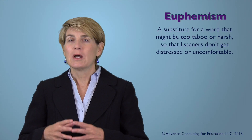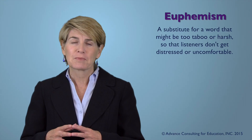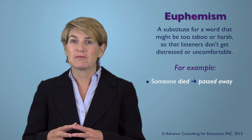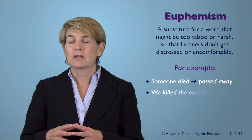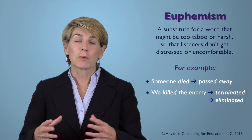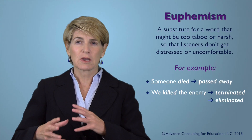A euphemism is a word we substitute for something that might be taboo, too direct, or might make people feel too distressed or uncomfortable. Classic examples: instead of saying someone dies, we say 'to pass away' — it has a softer feel. In war, instead of saying 'we killed the enemy,' we can say 'we terminated the enemy' or 'we eliminated the threat.' So euphemisms allow us to cushion or soften the harshness of what we would otherwise say.